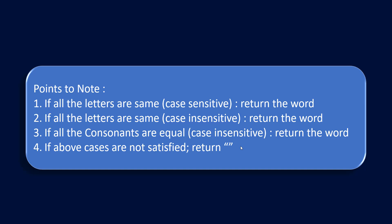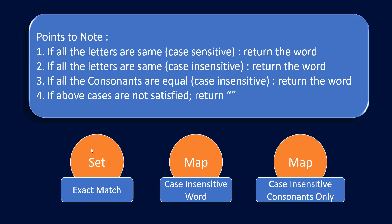So these were the four points to note. To solve this question: exact match can be handled with a set — if that word is present in the set we return it. For case-insensitive matching, we use a map where the key is the lowercase form of the word and the value is the first occurrence from the word list. For consonant-only matching, we mark all vowels with a temporary character like a star, store that pattern in lowercase as the key, and map it to the first occurrence of that pattern in the word list. If none of the three match, we return a blank string.